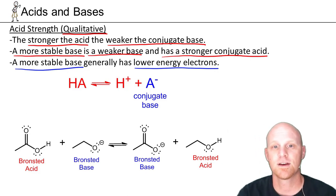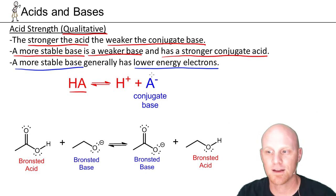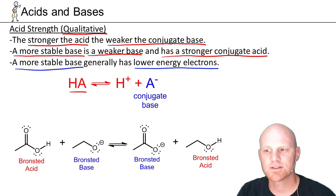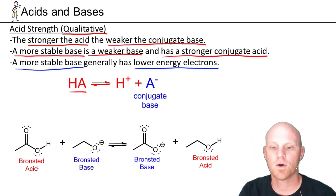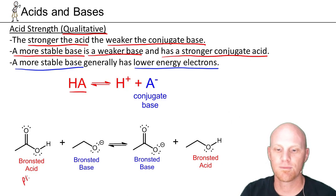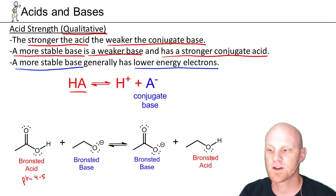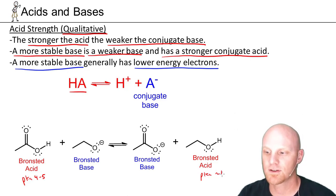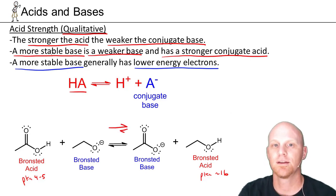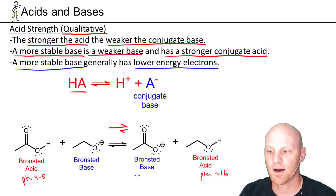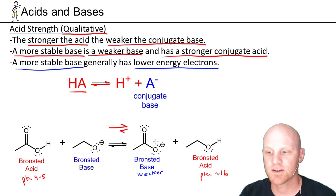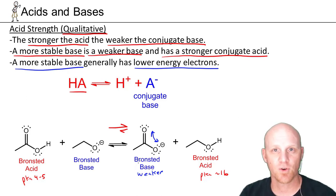Looking at an acid HA dissociating to give H+ and A−, that conjugate base — the more stable it is, the weaker it is, but the stronger the acid. Going back to the Brønsted acid-base reaction, a carboxylic acid has a pKa in the four-to-five range while an alcohol has a pKa around 16. The weaker acid is on the right — the higher pKa — so the equilibrium lies toward the right. The weaker base in this reaction is stabilized by resonance delocalization of the negative charge over both oxygens.